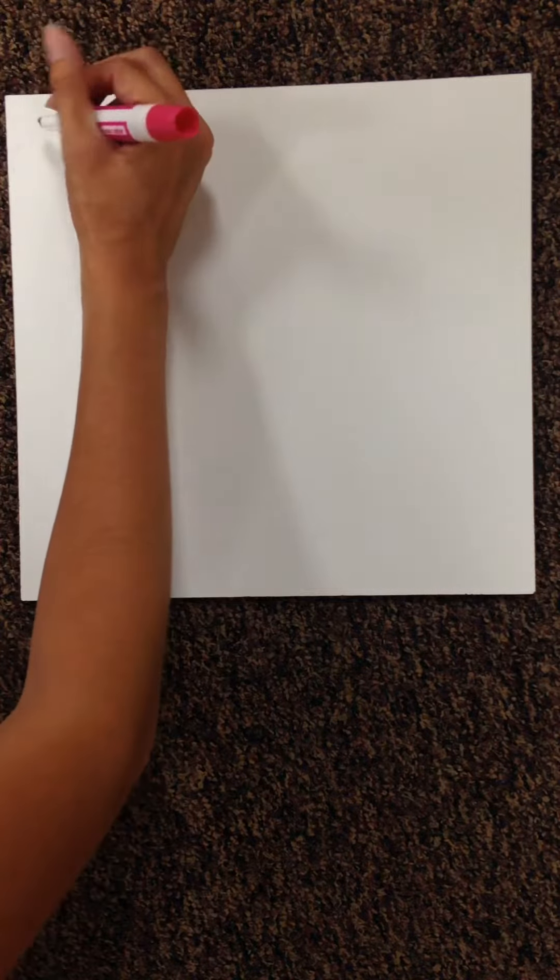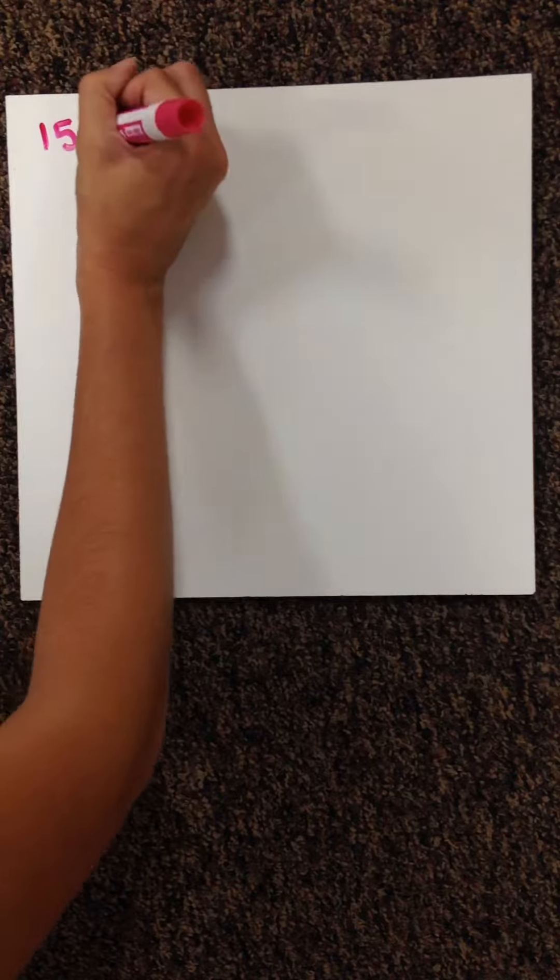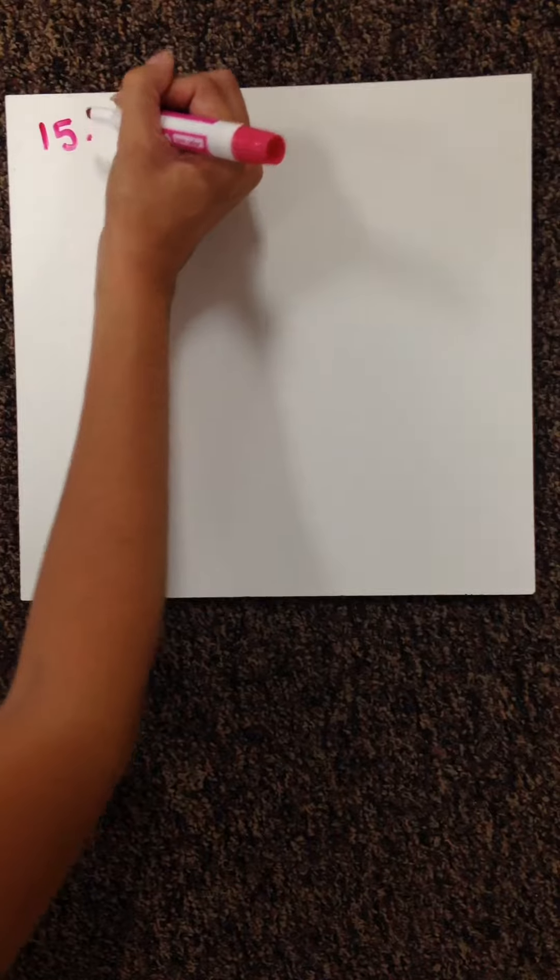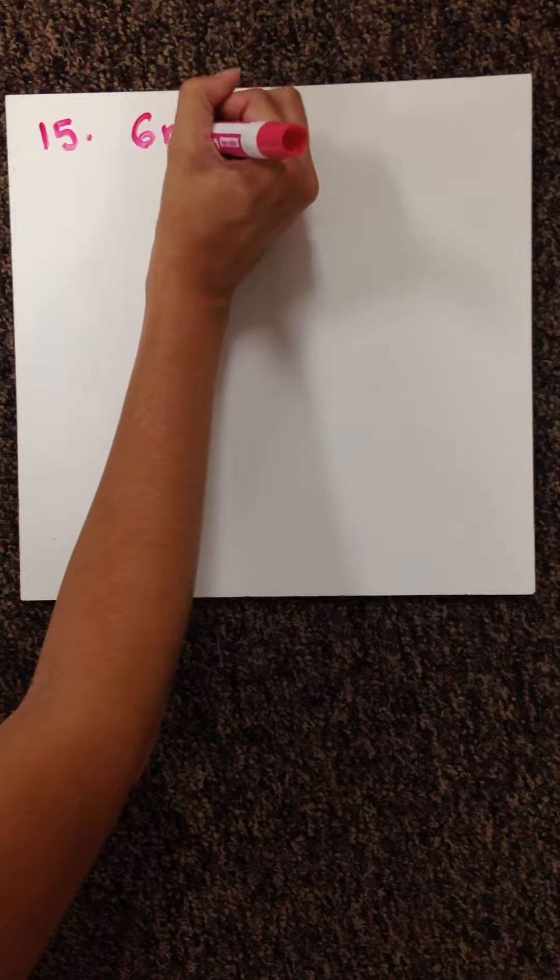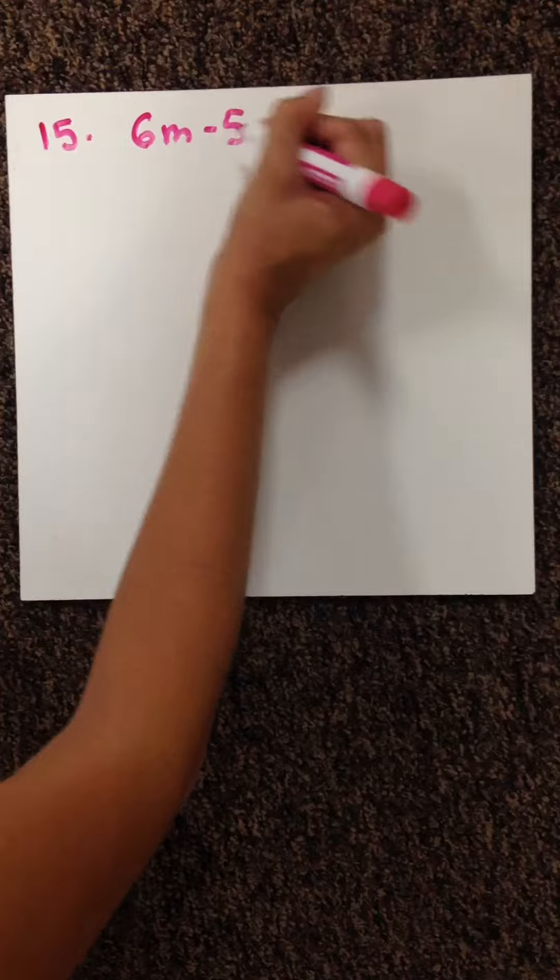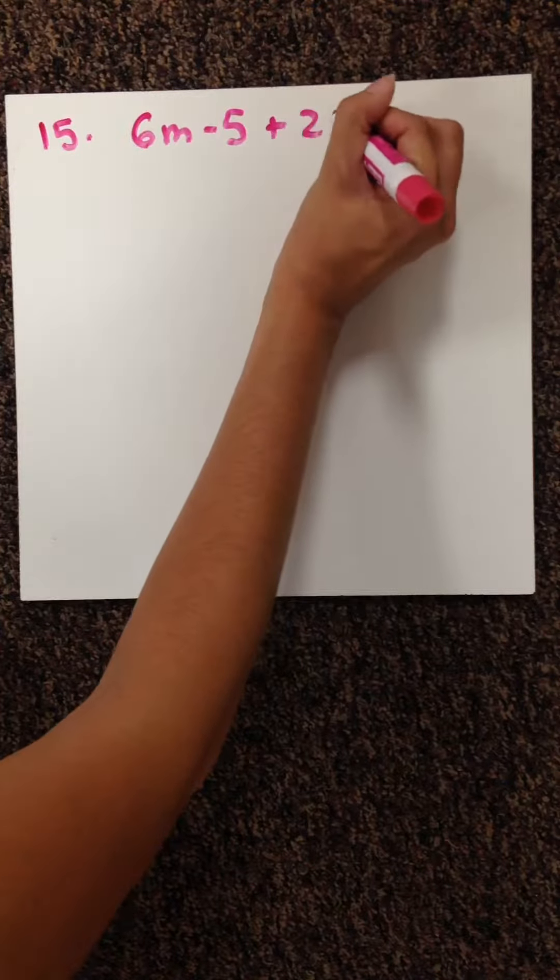Our final problem that we're going to do on the 1.5 worksheet is number 15. They give you 6m minus 5 plus 2n.